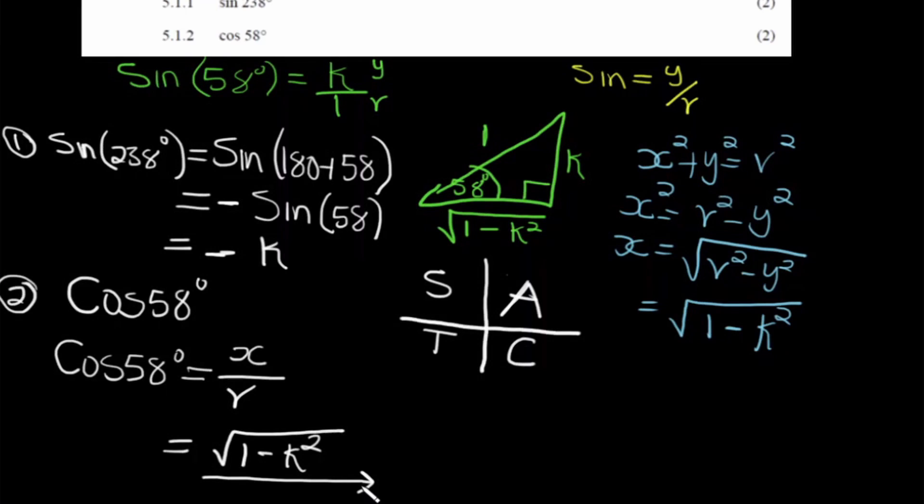This is how we find the adjacent side. We use the Pythagorean theorem to find the adjacent. And remember which quadrants have which trigonometric functions positive. Use the ASTC rule: All, Sine, Tangent, Cosine are positive in their respective quadrants. The rest are negative. Alright.